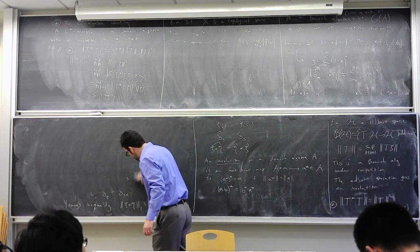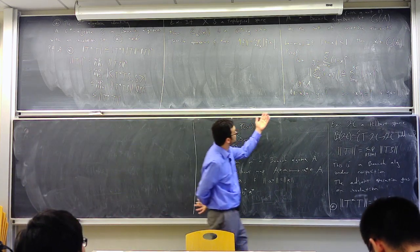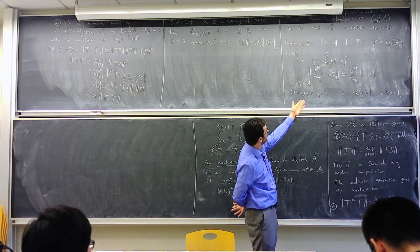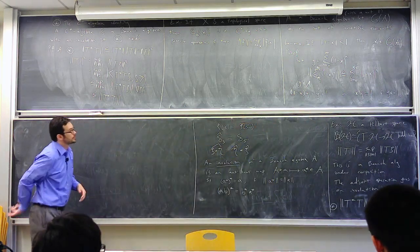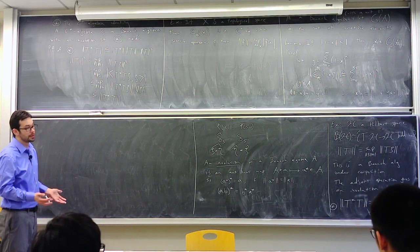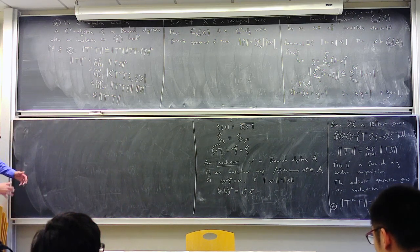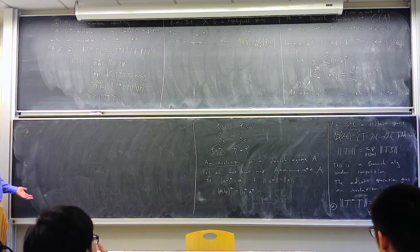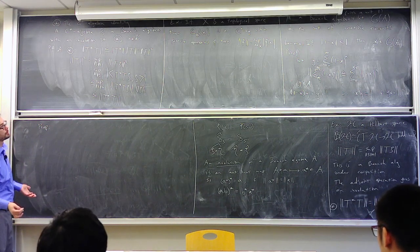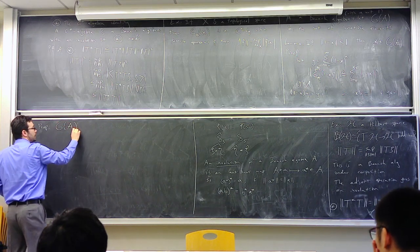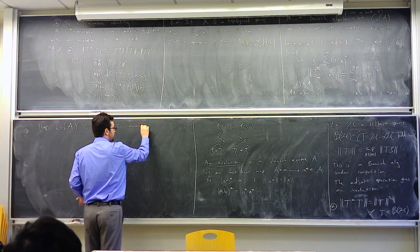What's important here is not just that there are lots of invertible elements, but that we have a specific geometric series formula for the inverse, which also gives a bound on the norm of the inverse. As a consequence, not only do we have lots of invertible elements, but the space of invertible elements G(A) forms an open set and inversion is continuous.